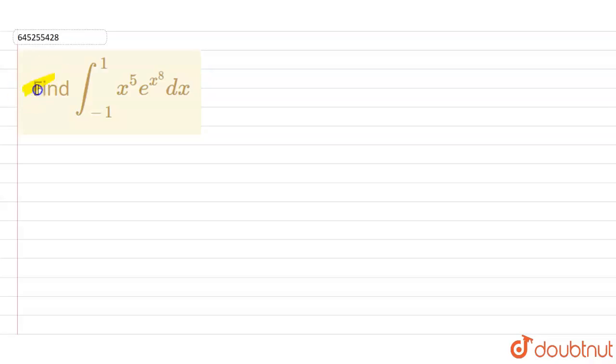Our question is find integral from minus 1 to plus 1, x power 5 into e power x power 8, dx. So here this is the given integral.